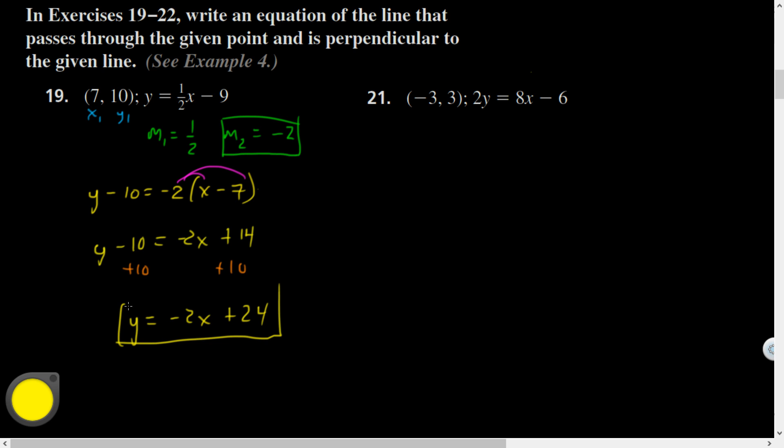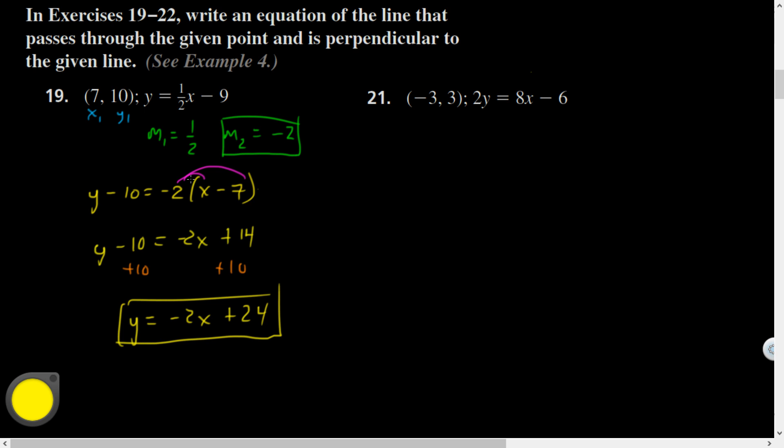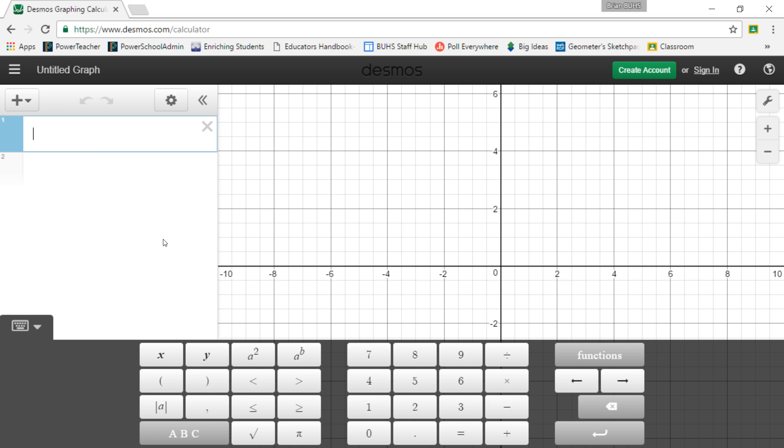And then I would add 10 to both sides to get Y by itself. And I end up with a Y equals negative two X plus 24. So let's just do a quick check on this. I'm going to pull in my Desmos calculator.